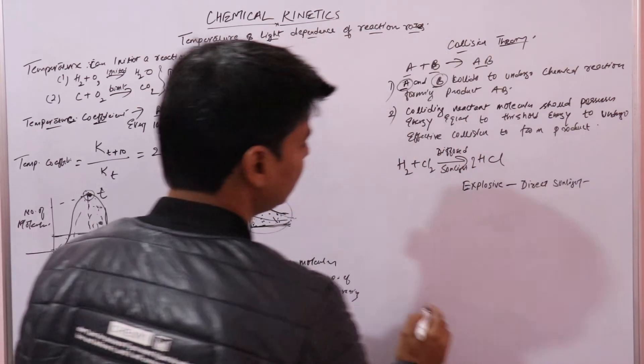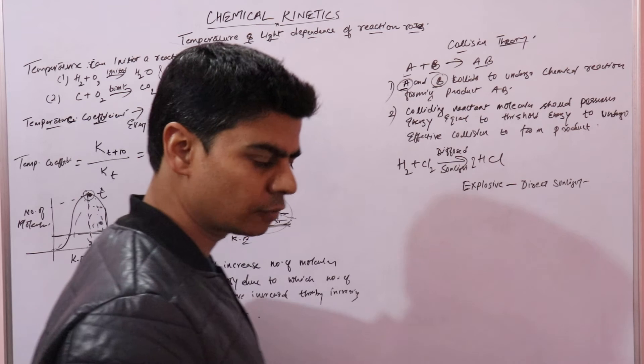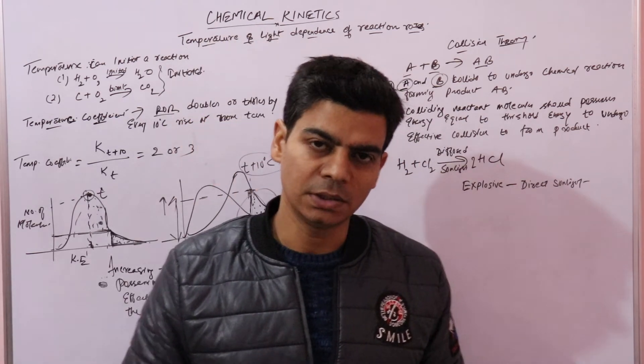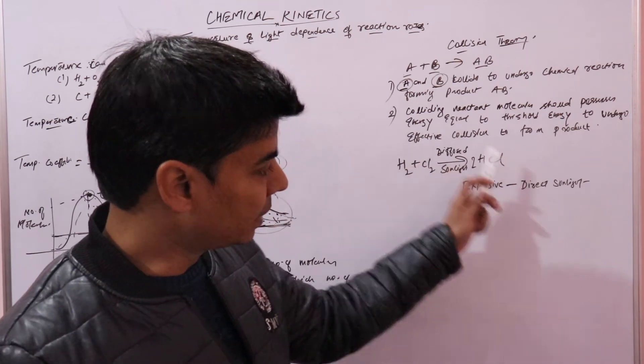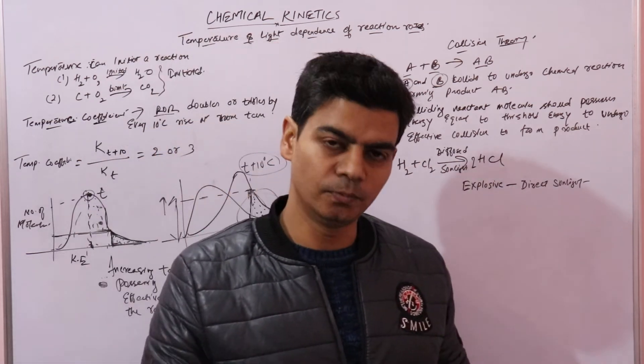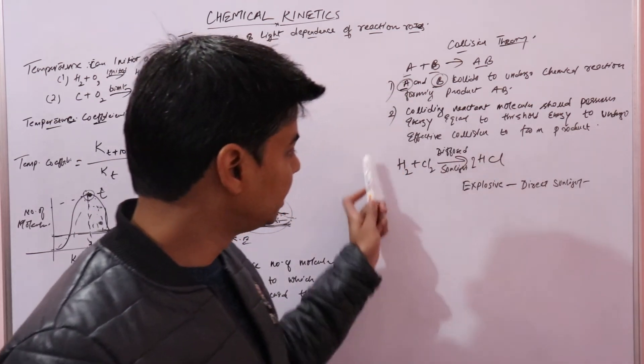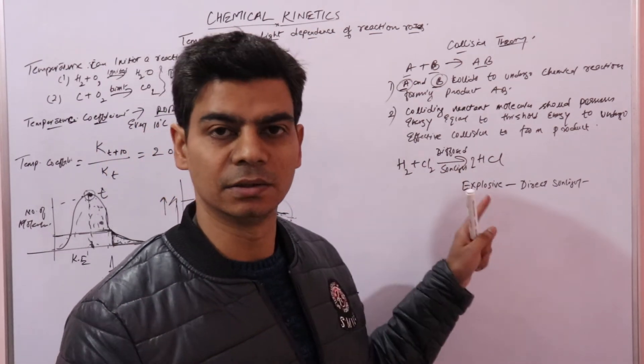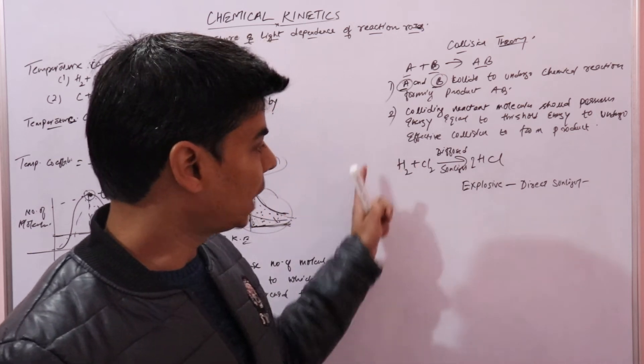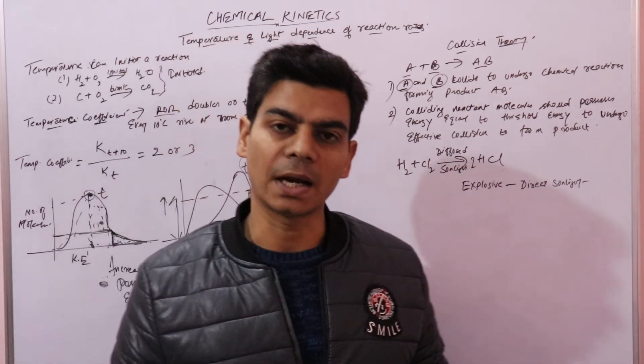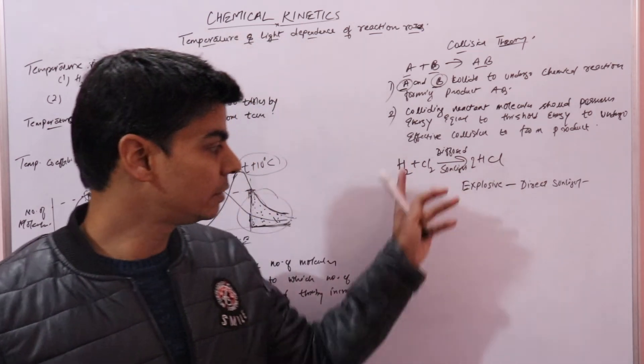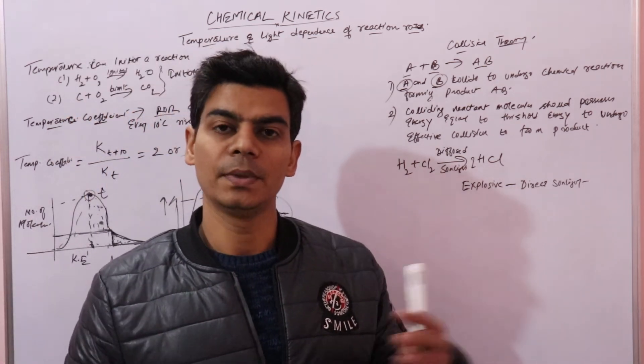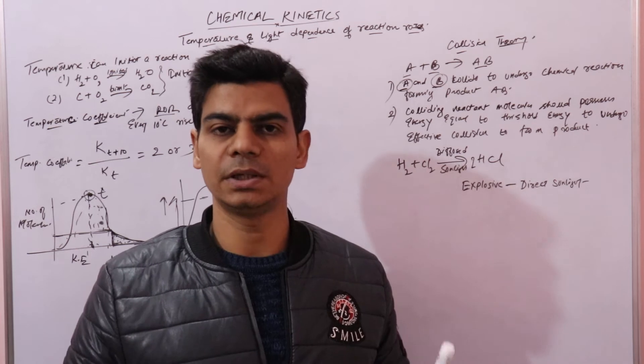Now we know that sunlight is also a form of energy. Light, temperature is a form of energy. So energy, we know that energy will increase the effective collisions between the reactants. So here the reactants started reacting because sunlight has increased the effective collisions between the reactant molecules.